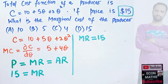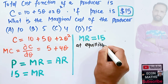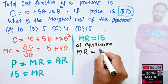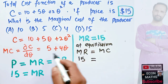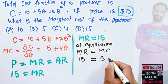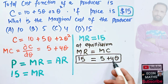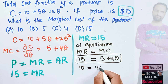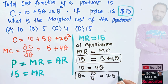At equilibrium, marginal revenue should equal marginal cost. Marginal revenue is 15 and marginal cost is 5 + 4Q. Equating these: 15 = 5 + 4Q, which gives 10 = 4Q, so Q = 10/4 = 2.5. Our equilibrium output is 2.5.